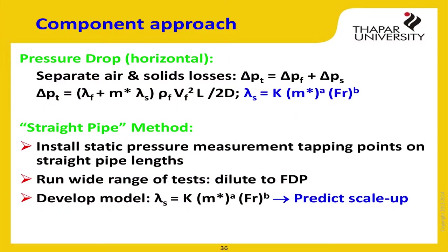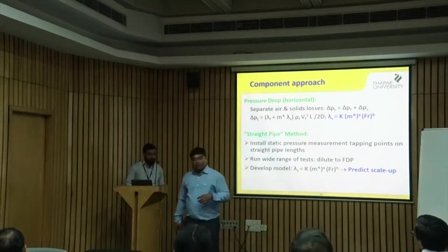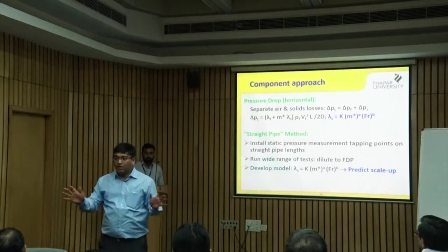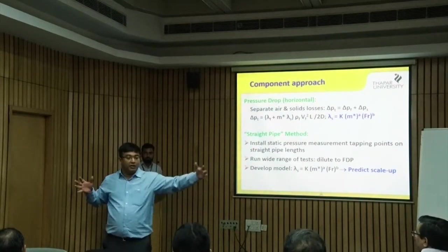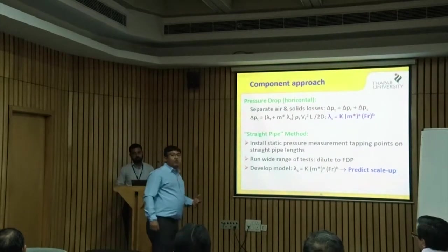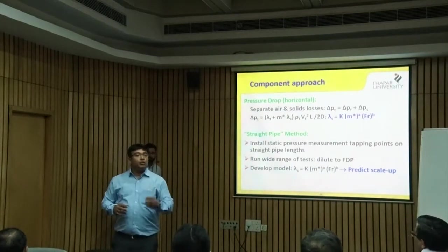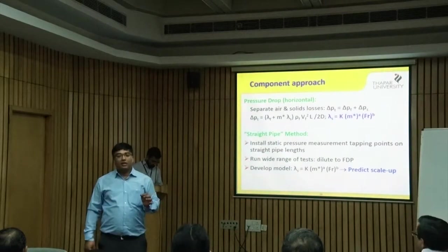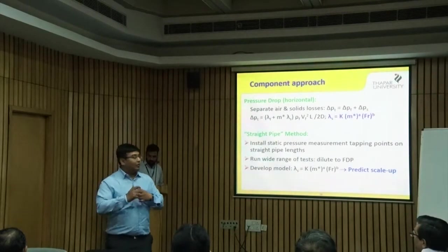We go into a little more detail on how to calculate pressure drop in a pneumatic conveying system with powders. What we do is component separation — straight pipes, bends, horizontal, vertical — and we use different formulas for each, then add them all up to get the total pipeline pressure drop. We also separate air-only loss from solid loss: we calculate the loss as if there is no solid in the line (air only), then calculate the solid loss, and add them together.